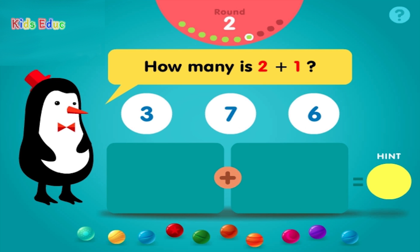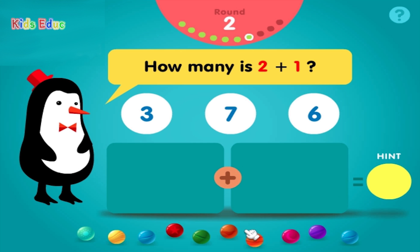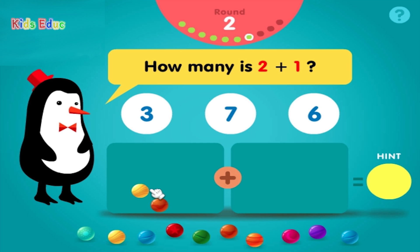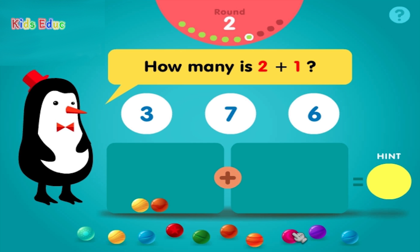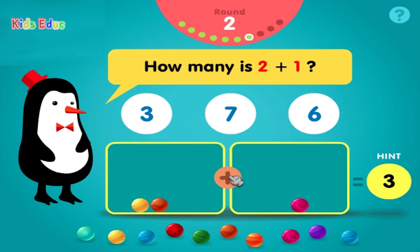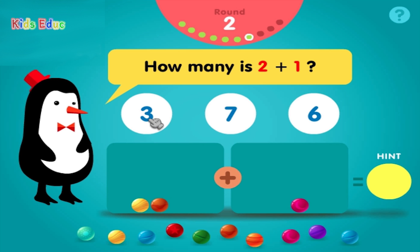How many is 2 plus 1? 1, 2, plus 1, equals 3. Correct!